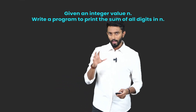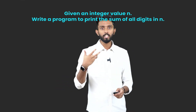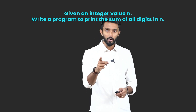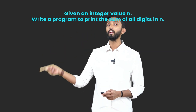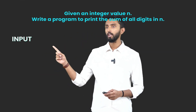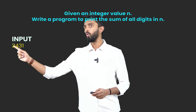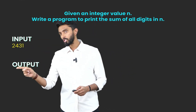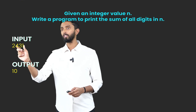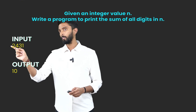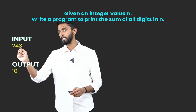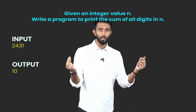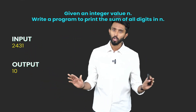Now what does this mean? Clarity on what the expectation of the program will always appear in your mind if you look at the input and output format. So they are saying if input is 2431, then the output has to be 10. How did 2431 become 10? Because 2 plus 4 is 6, 6 plus 3 is 9, 9 plus 1 is 10. So sum of all the digits in a number.